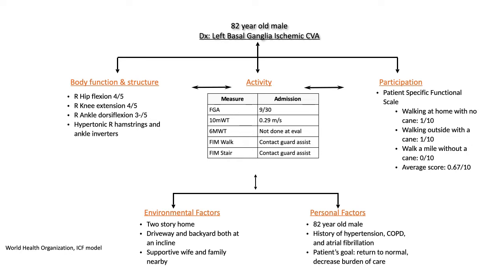Initial measures revealed a functional gait assessment score of 9 out of 30, a gait speed of 0.29 meters per second, and he ambulated and ascended and descended stairs at a contact guard assist level with a quad cane. His patient-specific functional scale averaged 0.67 out of 10 regarding his confidence in performing his desired activities. The patient lives in a two-story home, needs to negotiate inclines around his home, and has a supportive family.